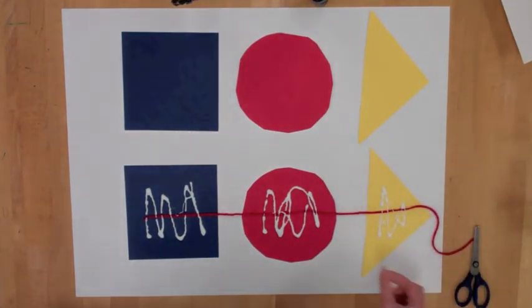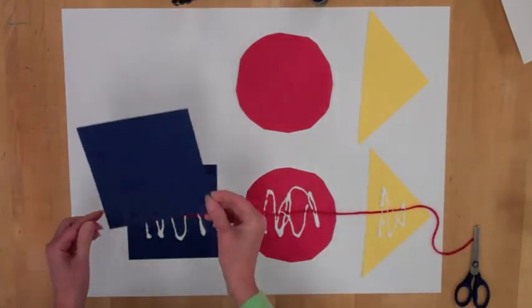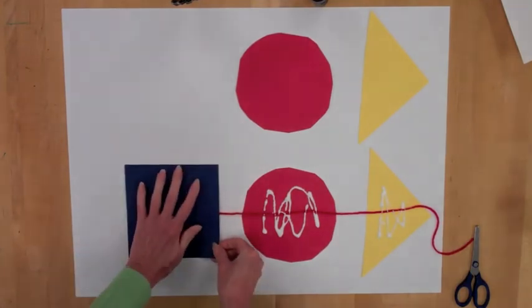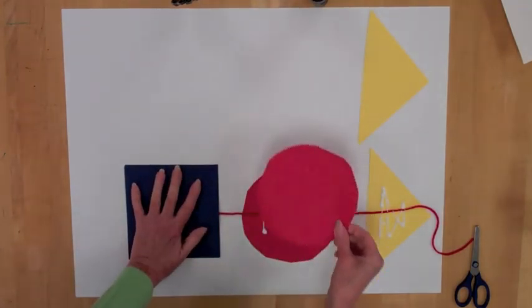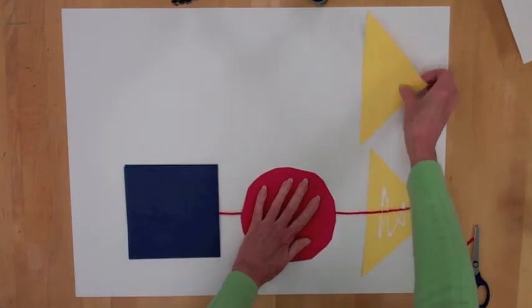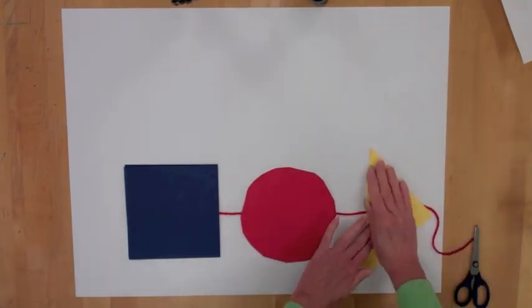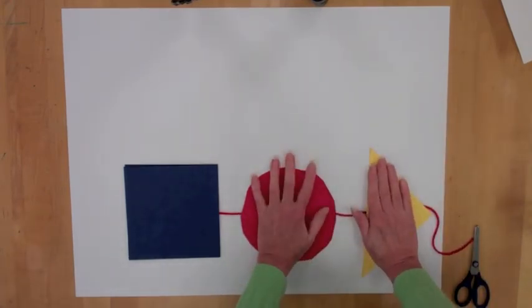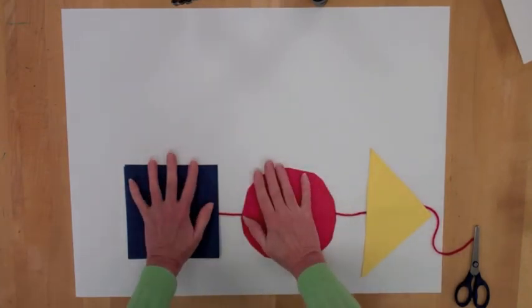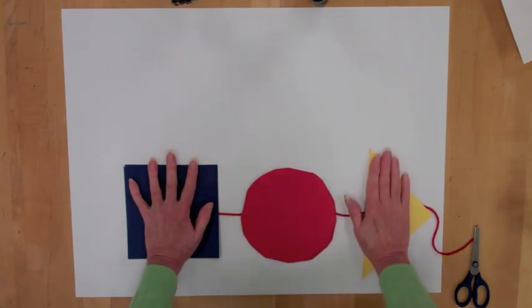And then you place your bread, top piece of bread on top. I tell the children to hold it down for ten seconds. One, two, three, four, five, six, seven, eight, nine, ten. In order for the glue to stick together.